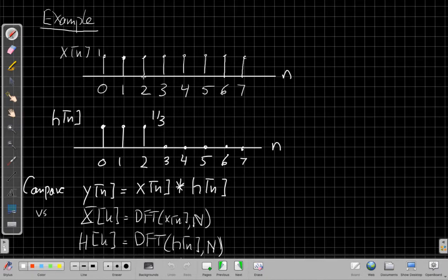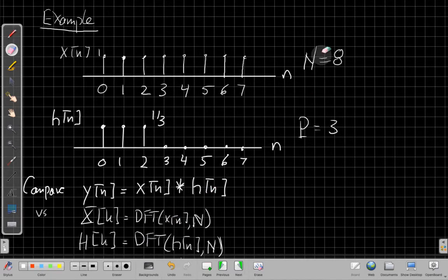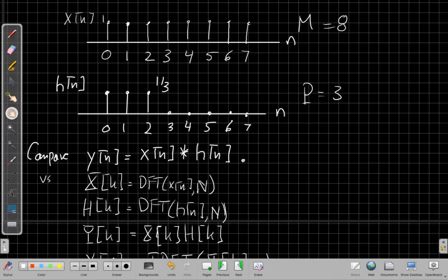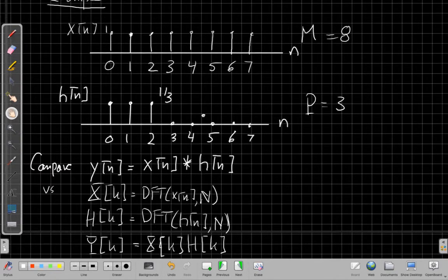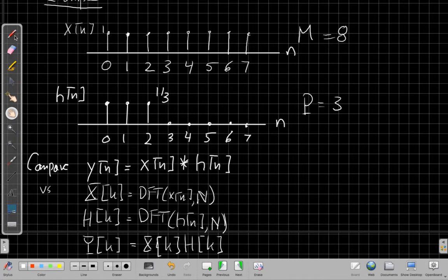If we make the number of samples in frequency big enough, circular convolution will equal linear convolution because there won't be any aliasing of Y[n]. I can use this approach with DFTs as long as I'm careful to have a big enough DFT size. Let's look at an example. I have this rectangular pulse that's N equals 8 samples long, from 0 to 7, and I'm going to filter it with this filter that averages the current signal with the two previous ones.